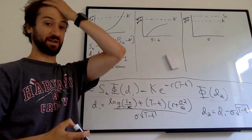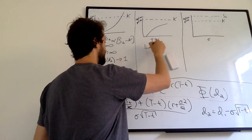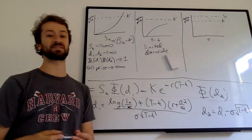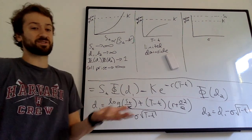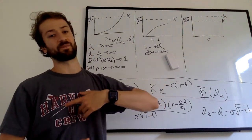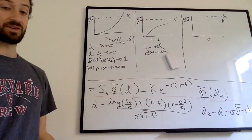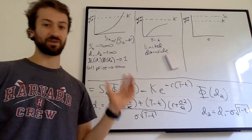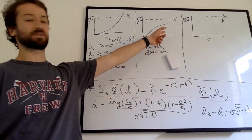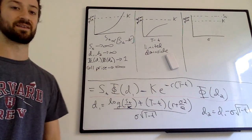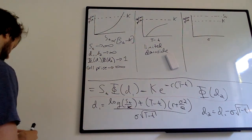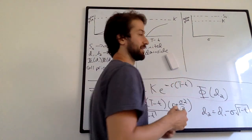We talked about this in the very first video of this section. The reason is that there is limited downside. The price of the option is the expected value of max(stock minus K, 0), because if the stock ends up below the strike price, you just don't exercise — you let the option expire worthless. So the longer the time to expiry, the more the stock could go up, and on the downside the worst case is just zero. You have capped downside and unlimited upside, so you want as much time as possible.